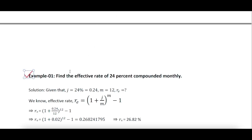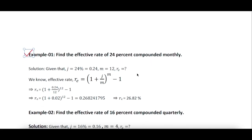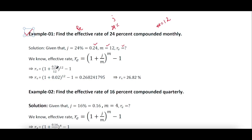Example 1: Find the effective rate of 24% compounded monthly. Here 24% is the nominal rate j, and since it is compounded monthly, m = 12. Using r_e = (1 + 24%/12)^12 − 1, after simplification the result is 26.82%. You can see that the effective interest rate is a bit bigger than the nominal rate.